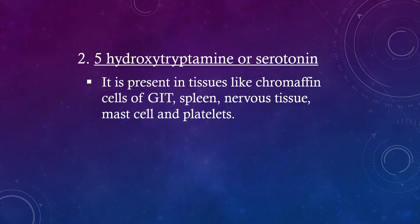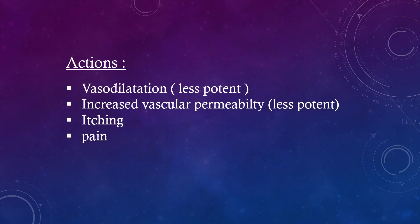5-Hydroxytryptamine, or serotonin. It is present in tissues such as chromaffin cells of the GIT, spleen, nervous tissue, mast cells, and platelets. Actions: vasodilatation (less potent), increased vascular permeability (also less potent), itching, and pain.